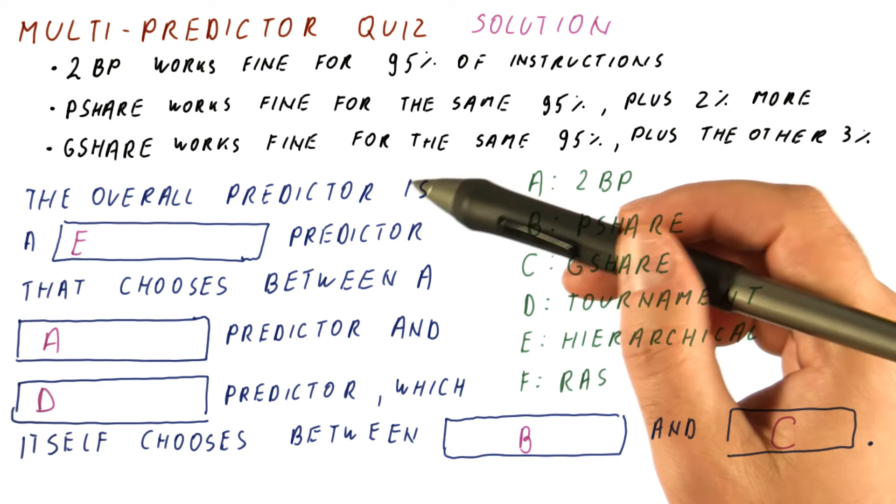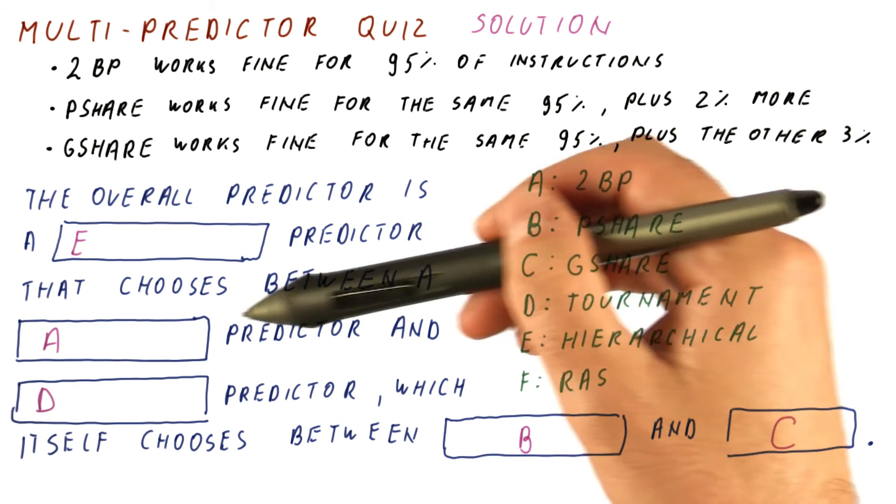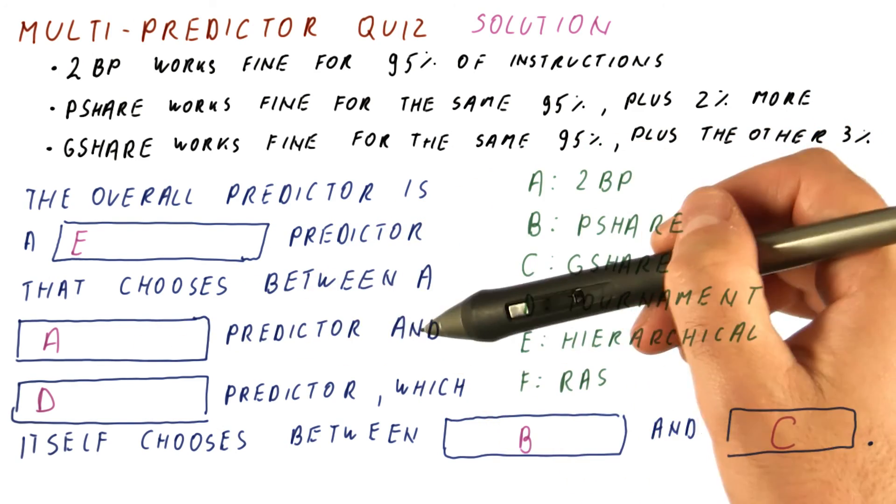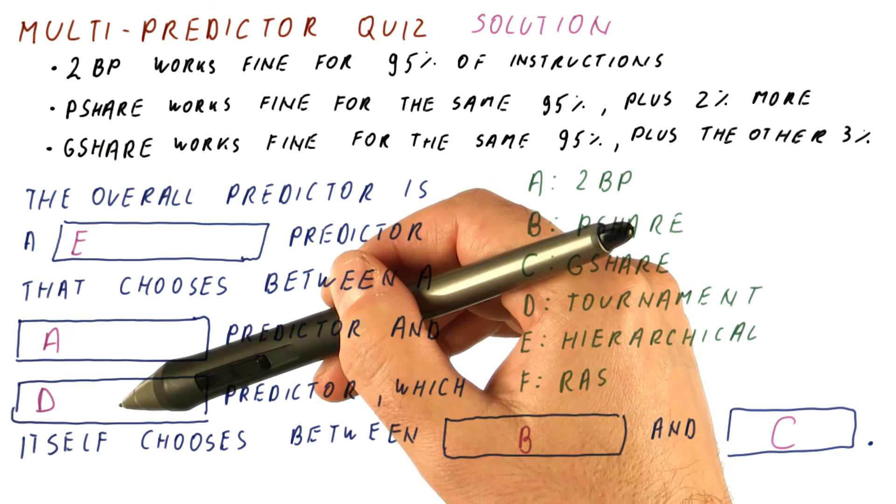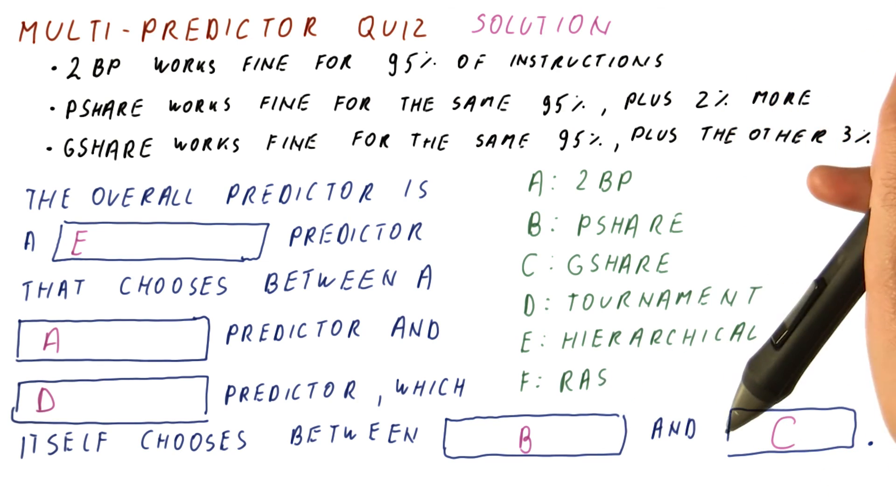So the correct answer is that the overall predictor is a hierarchical predictor that chooses between a two-bit predictor and a tournament predictor, which itself chooses between P-share and G-share or the other way around.